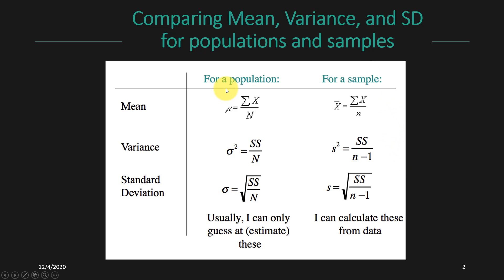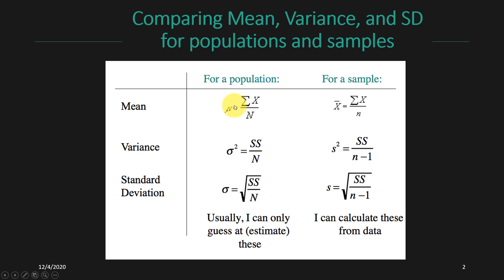When we're talking about our different calculations, we've broken things down in previous videos into the parameters in the population that we could hypothetically calculate if all of the values were actually known, and then the statistics that we calculate in individual samples where we try to get an estimate of what's going on in the population. The sample mean or x-bar is an unbiased estimate of the population mean mu.